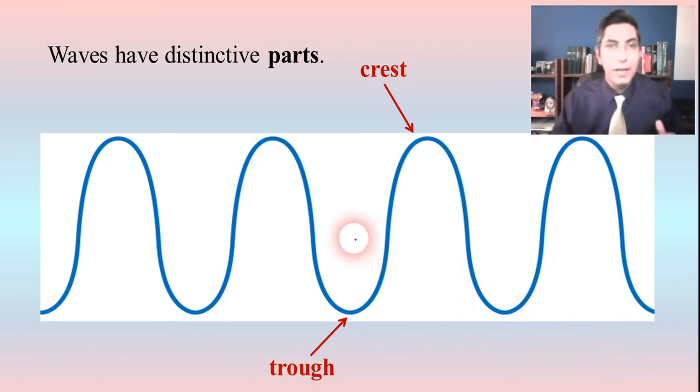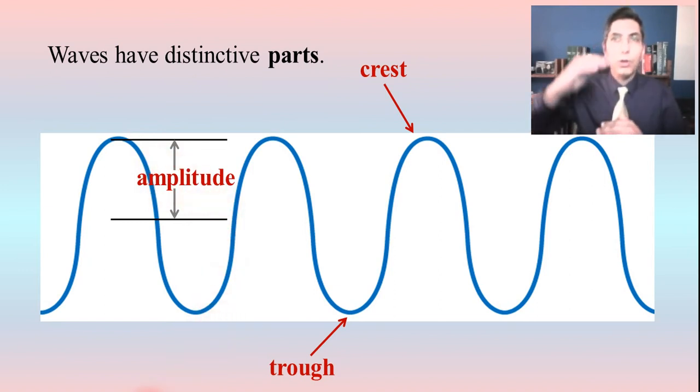Now if we take the midpoint of the wave, so that this point right here up to the very tip top, that distance from the midpoint up to the top of the wave is called the amplitude. So the taller the wave is, the higher its amplitude. And we'll talk more about what that means here, especially with regard to sound waves a little bit later in a future video.